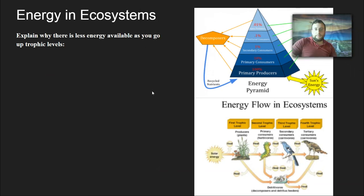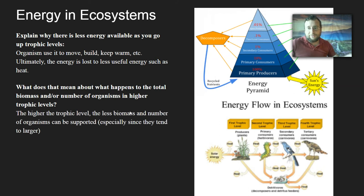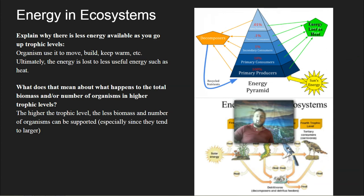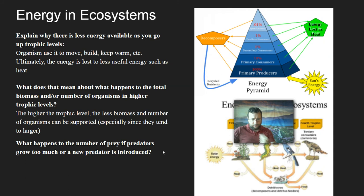Energy does not cycle back to the start — it gets used up or lost as heat, while matter gets cycled back through the decomposers. Less energy at higher levels means fewer organisms can be supported there, especially since they tend to be bigger. Bigger organisms live at the top because they eat smaller things, which eat smaller things — so they tend to be larger but far fewer in number. That's why the top of the food web has less diversity than the bottom.